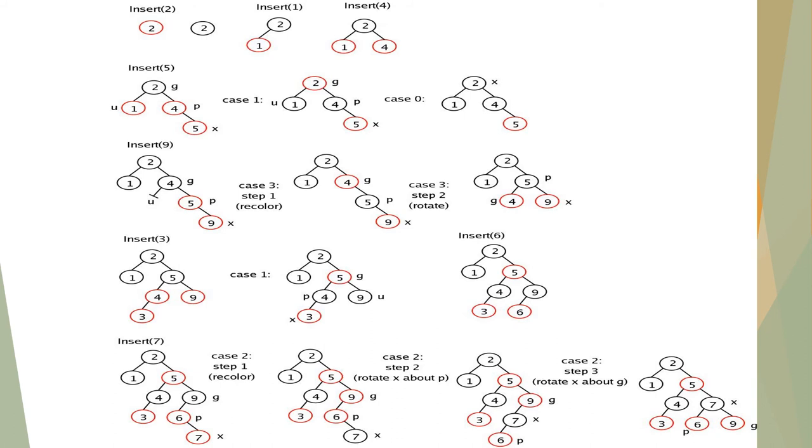Insert 7. As it is greater than 6, it goes to the right sub-tree. Node 7 is in red color because a newly added node should be red in color. But here it violates the property of red-black tree because 6 and 7 are having the same color. We have to change the colors here — so change node 7 to black color. Here it performs a double LR rotation: first rotate to the left side and then rotate to the right side.